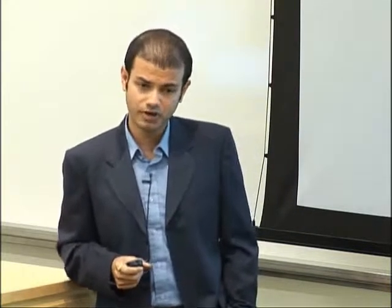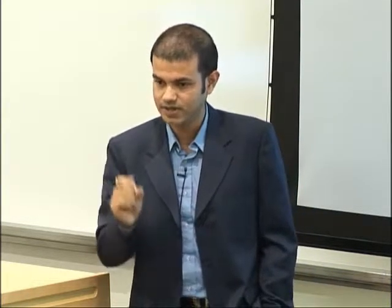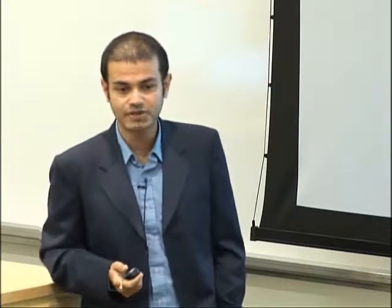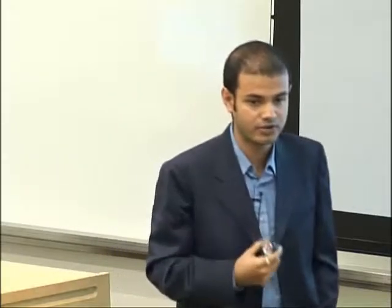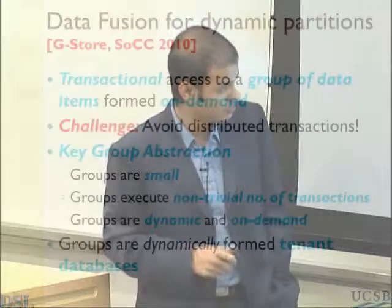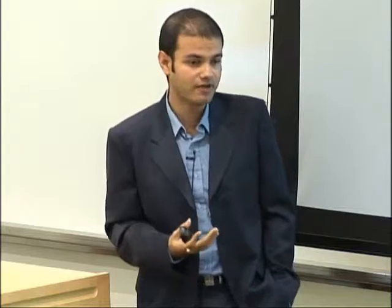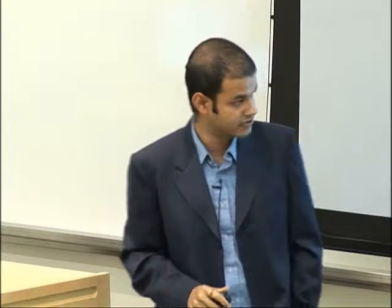What I want is for applications to declare to me what are the data items on which they want transactional access. We call this the key group abstraction. I want the groups to be small — I'll get into why. I want the groups to execute a non-trivial number of transactions as well. These groups can be dynamic and formed on demand, so the applications can form a group as well as delete a group. If you want to stretch your imagination to multi-tenant systems, you can view the groups as dynamically formed tenant databases.